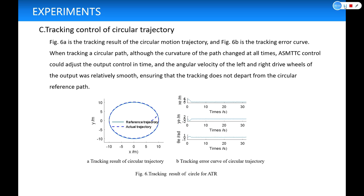Figure 6a is the tracking result of the circular motion trajectory. Figure 6b is the tracking error curve. When tracking a circular path, although the curvature of the path changes at all times, ASMTTC control could adjust the output control in time. And the angular velocity of the left and right driver wheels of the output was relatively smooth, ensuring that the tracking does not depart from the circular reference path.